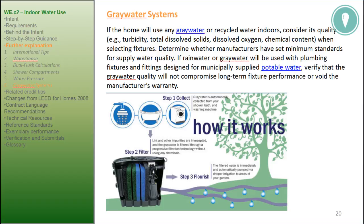Gray water systems: if the home will use any gray water or recycled water indoors, consider its quality — for example, turbidity, total dissolved solids, dissolved oxygen, and chemical content — when selecting fixtures. Determine whether manufacturers have set minimum standards for supply water quality. If rainwater or gray water will be used with plumbing fixtures and fittings designed for municipally supplied potable water, verify that the gray water quality will not compromise long-term fixture performance or void the manufacturer's warranty.